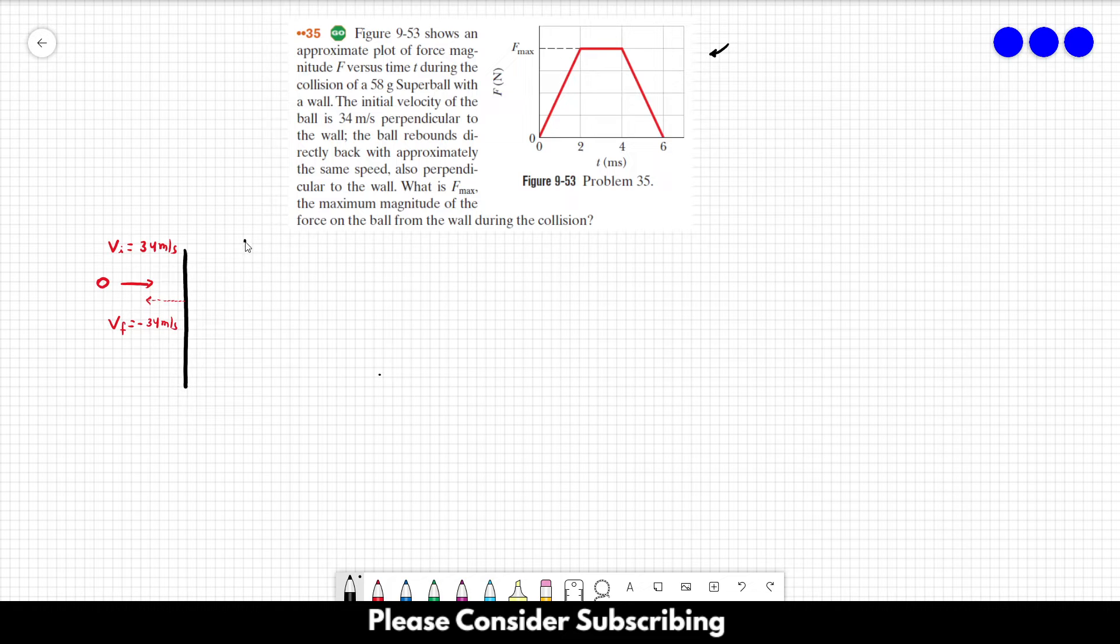Our strategy here is to remember that the impulse is equal to the change in the linear momentum. So the change in linear momentum can be written as the final linear momentum minus the initial linear momentum.